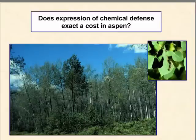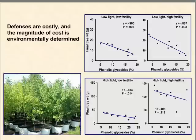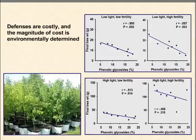Do these defenses exact a cost? Are they expensive to produce in Aspen, and are those expenses uniform across environments? We've run a number of different experiments looking at the cost of defense mostly in young Aspen trees, and what we found is that the defenses are costly to produce in terms of consequences for growth, and that the magnitude of cost is strongly environmentally determined. Each point in these graphs represents a different clone, with seven to ten different trees.